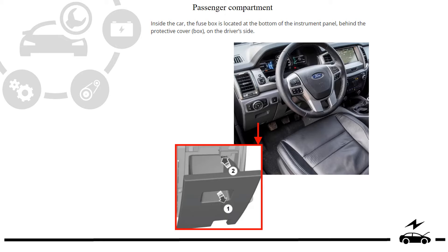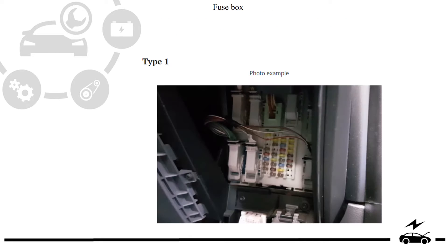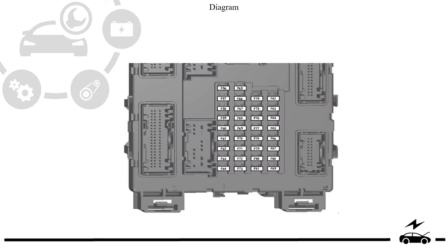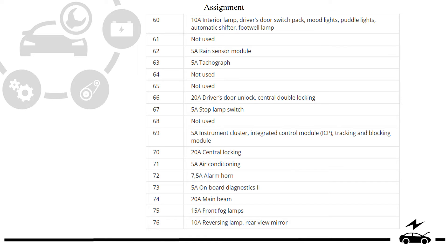Passenger compartment fuse box. Location. Type 1. Photo. Diagram. Assignment.